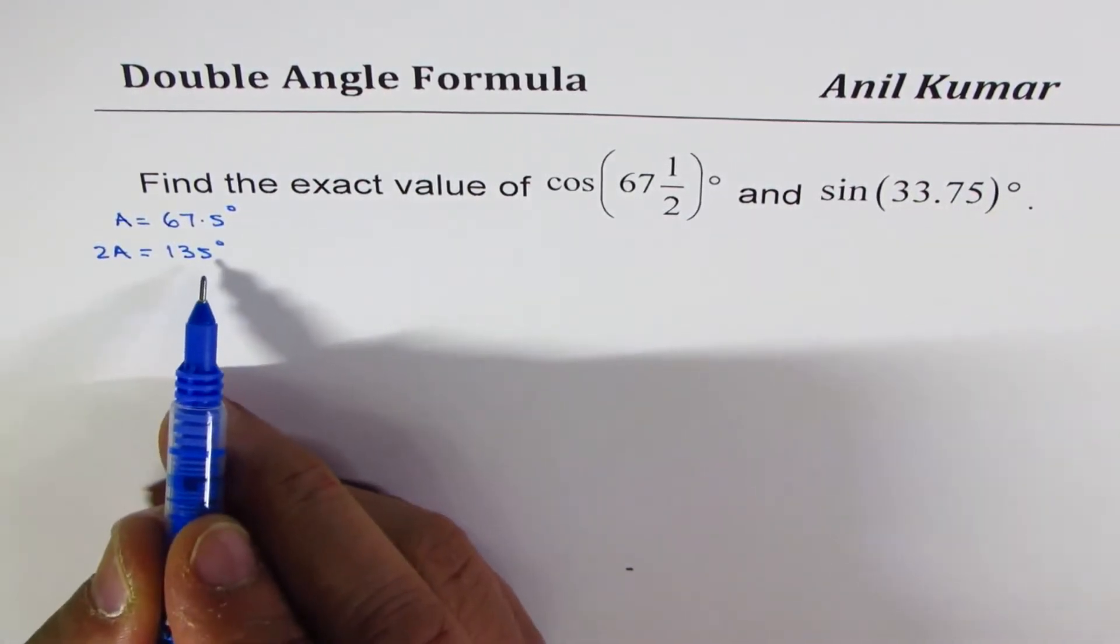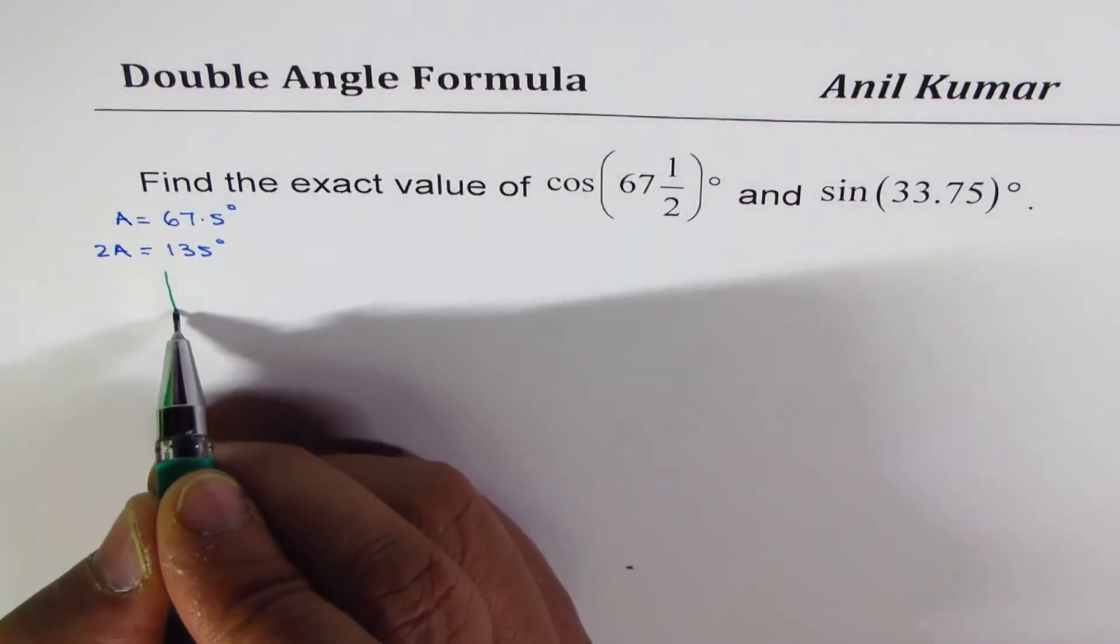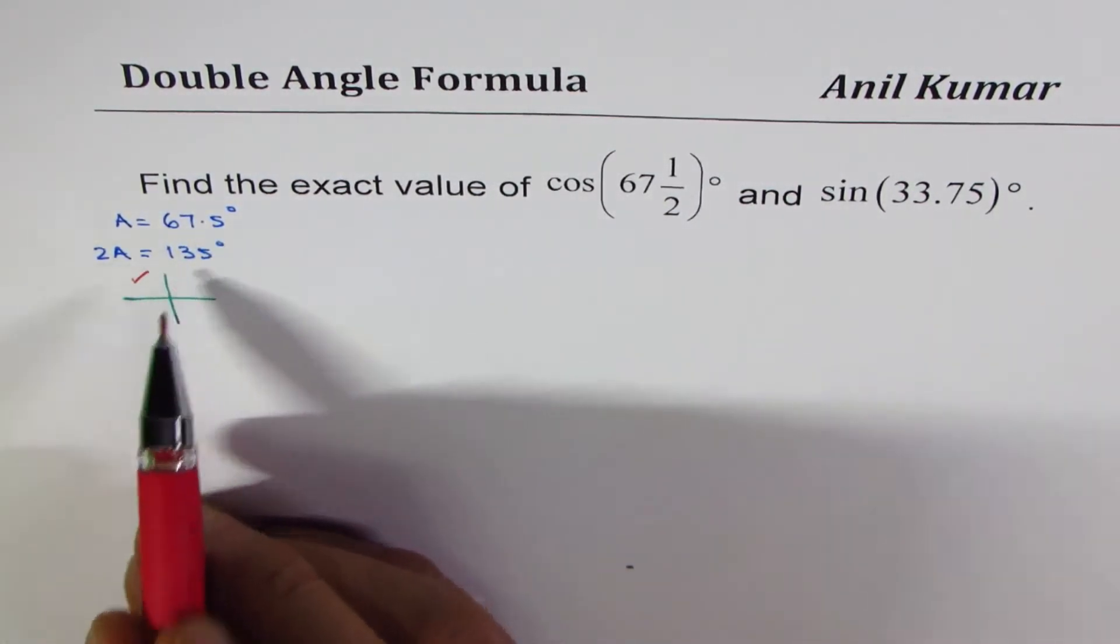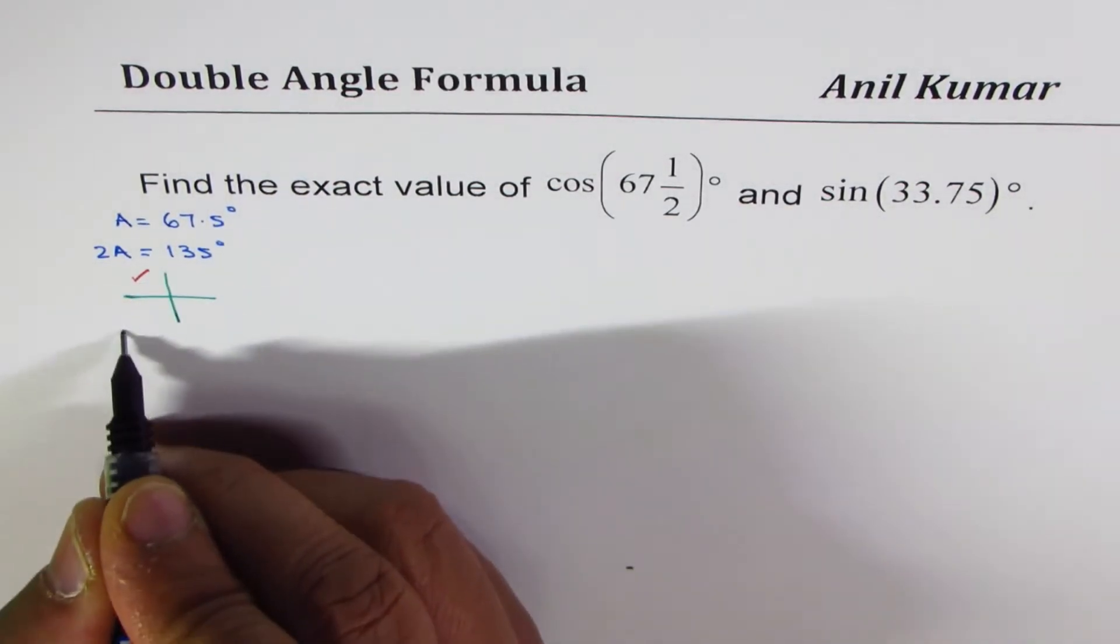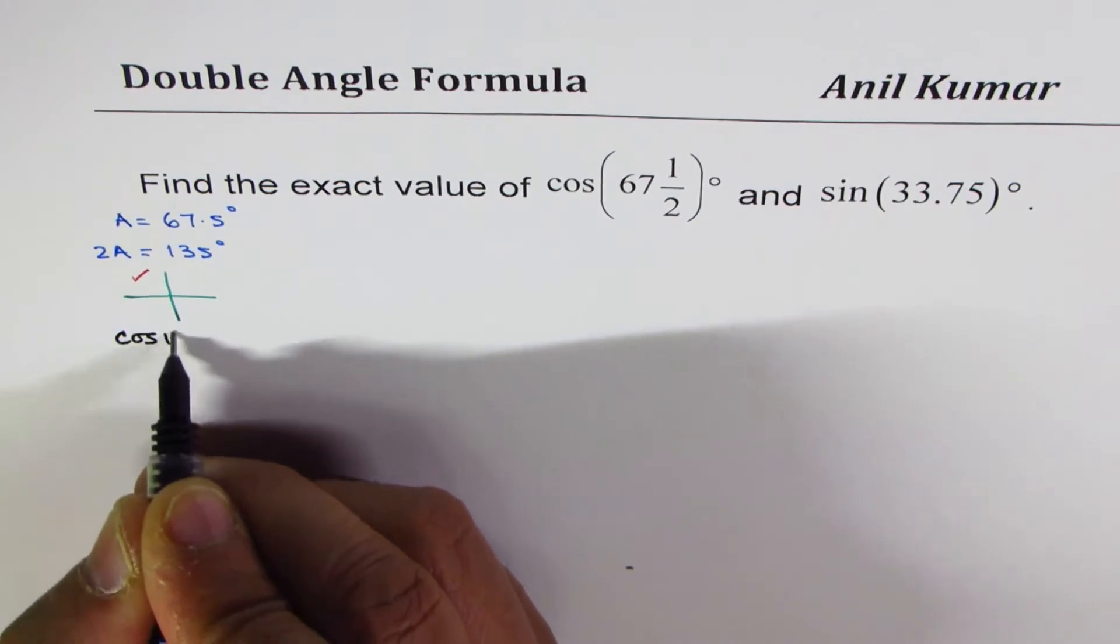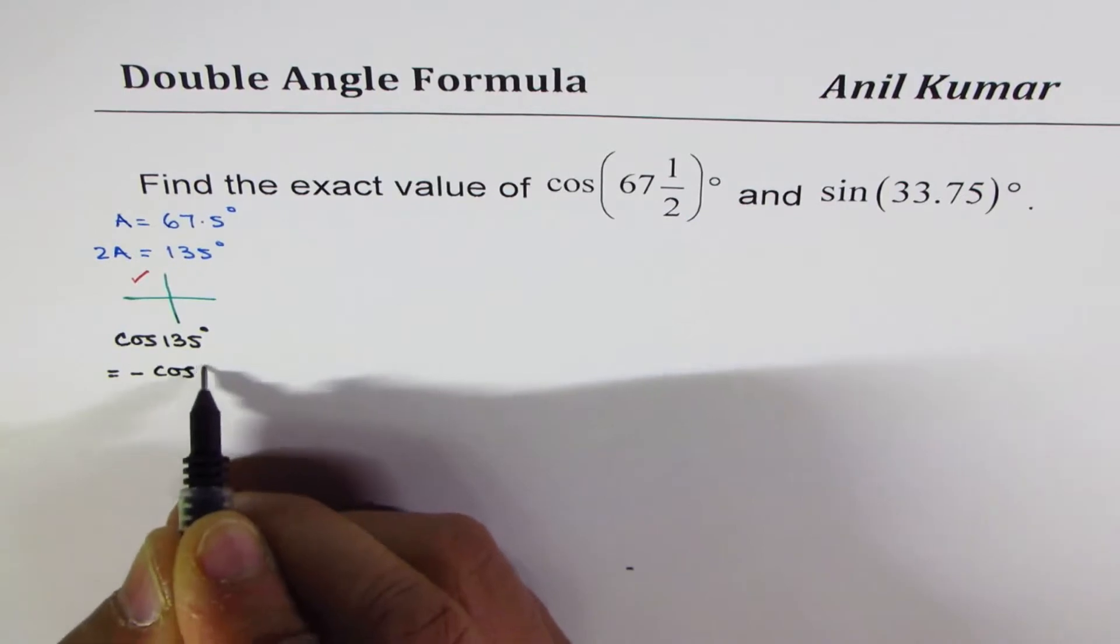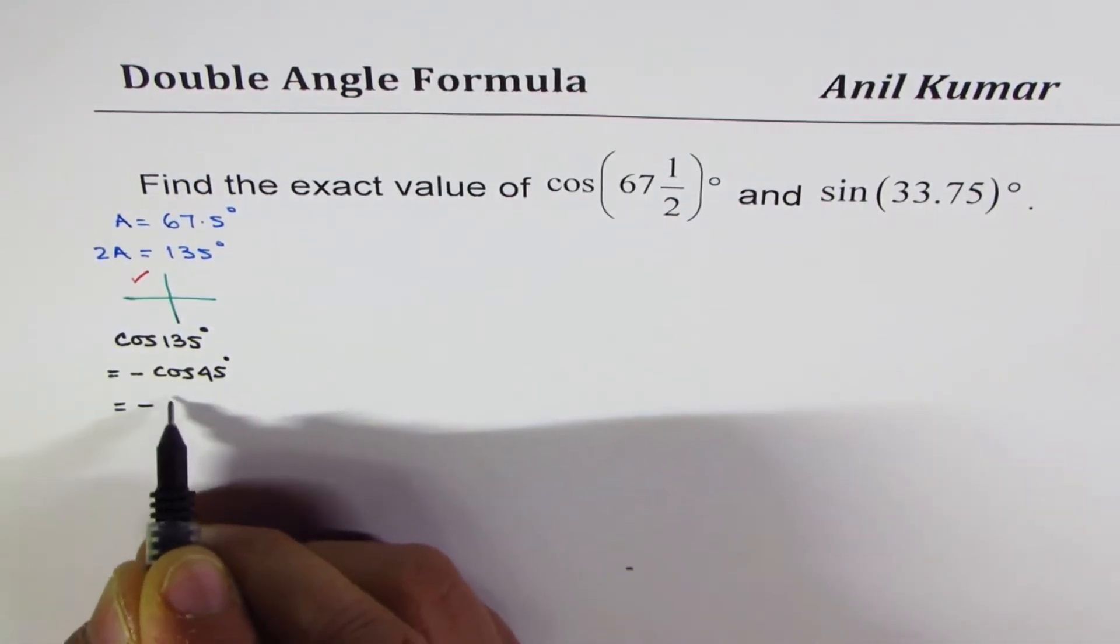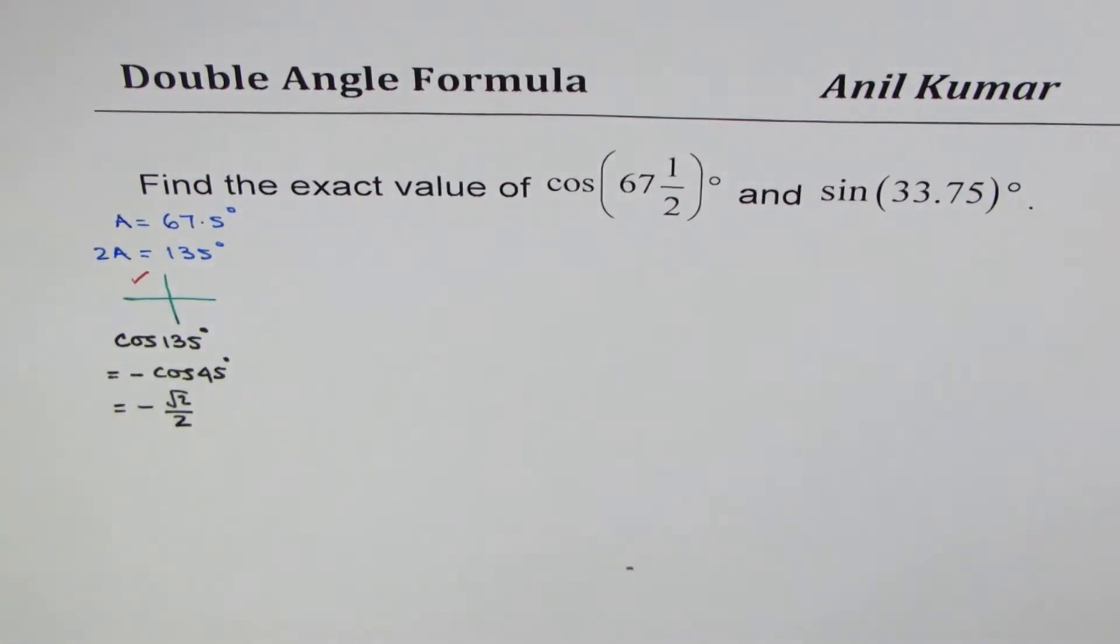Now since we know 135 degrees, 135 degrees basically means that we are in quadrant 2. So what is the value of cos 135 degrees? In this quadrant, cos 135 degrees is same as minus cos 45 degrees. And I could write this as minus square root 2 over 2. So that is cos of 135.